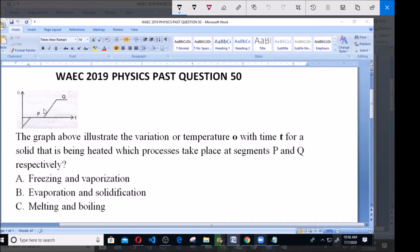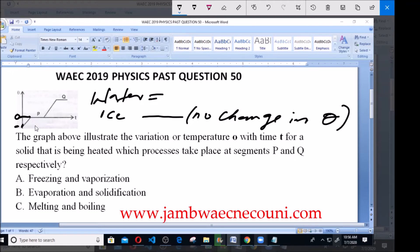This straight horizontal line signifies that there is no change in temperature. Although heat is being added at this point, the temperature doesn't change because the heat at this point is called latent heat or hidden heat.